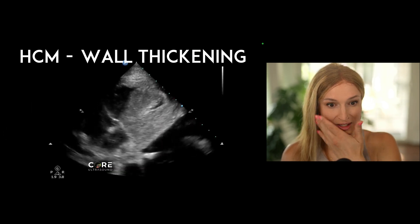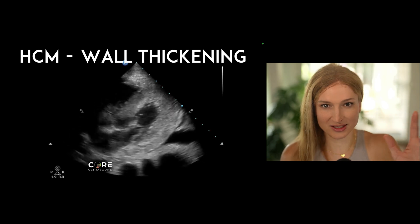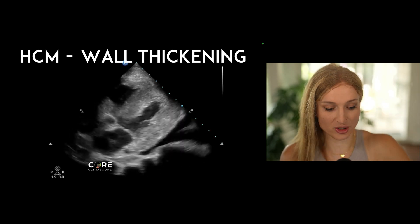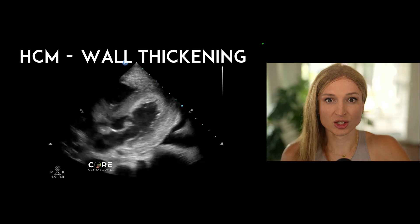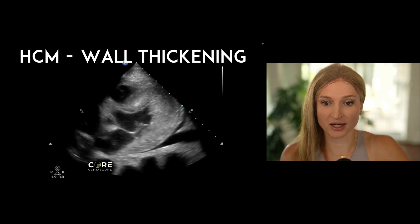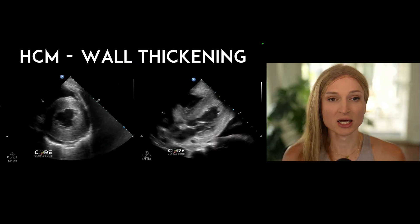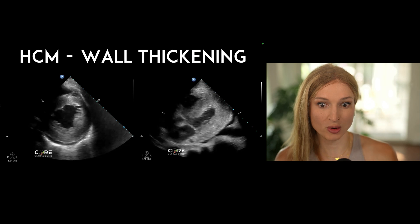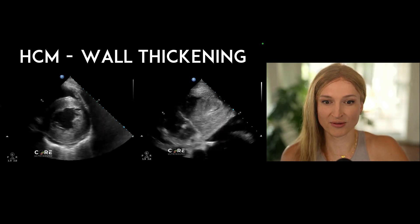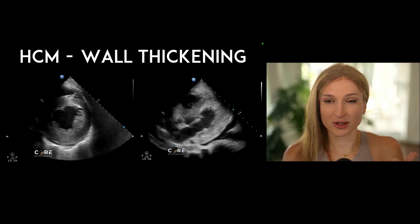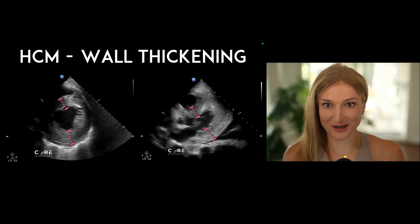Here's a patient with a bit of wall thickness. This one is a little symmetric on both sides, but just to show you where you measure — you can do this on the parasternal long axis view or the parasternal short axis view, just beneath the mitral valve itself. You're going to want to measure right here to get those ratios.